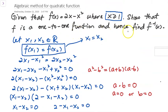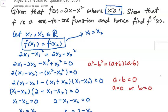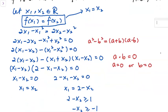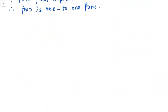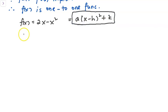Since it is a one-to-one function, we find the inverse. To find the inverse of a quadratic function, I suggest you first convert the function into completing-the-square form. Given f(x) equals 2x minus x squared, I want to change this into the form a(x minus h) squared plus k. To complete the square, I first factor out the negative.